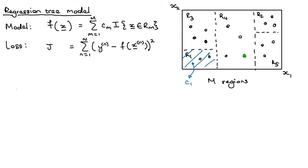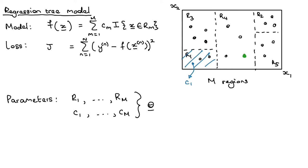There are two sets of parameters to optimize. The first is the regions R1 up to RM — we need to figure out where to place the axis-aligned boundaries in the input space. The second is the values assigned within each region: C1 up to CM. We can bundle all of these into theta, and write the loss as a function of theta. Different choices for the regions and the C's give different values for the loss.